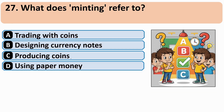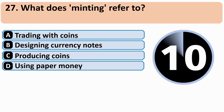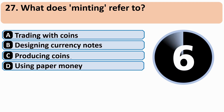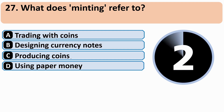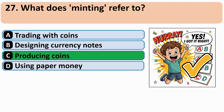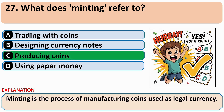What does minting refer to? The correct answer is C — Producing Coins.